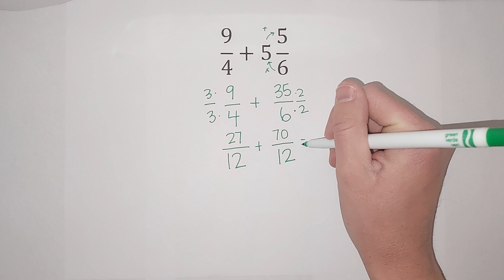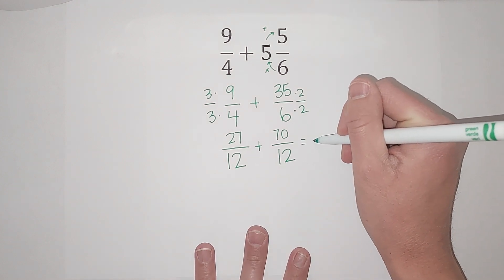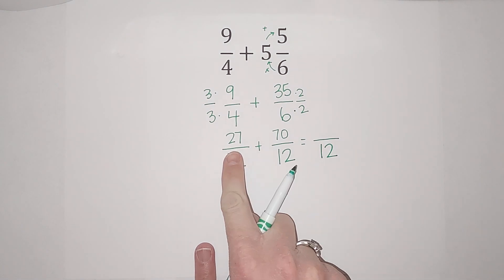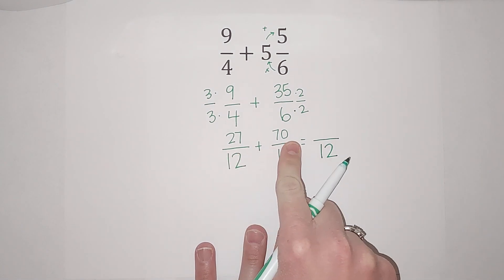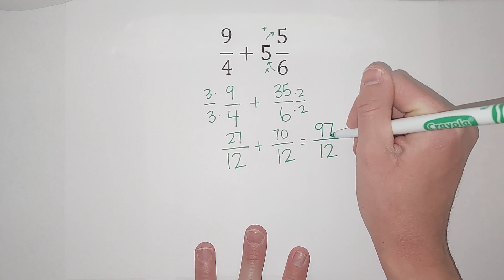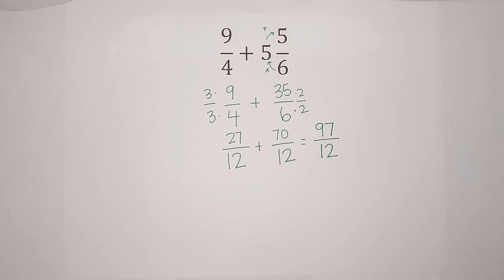Now when I add fractions, my denominator stays the same. That's why they needed to be the same. And then 27 plus 70 gives me 97. So 97 twelfths is my answer.